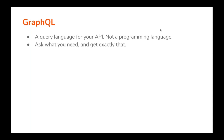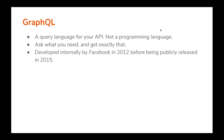Ask what you need and get exactly that — this is regarded as the best value addition GraphQL has introduced. Client applications can request only the data they require, making applications more efficient. This has been the major reason for multiple organizations to adopt this technology. GraphQL was developed internally by Facebook in 2012 before being publicly released in 2015. Although it was released not too many years ago, it's becoming very popular. It was initially developed to improve the Facebook mobile app and today powers billions of API calls a day.